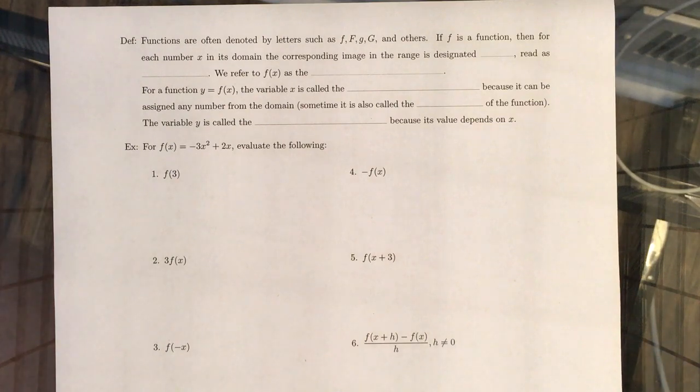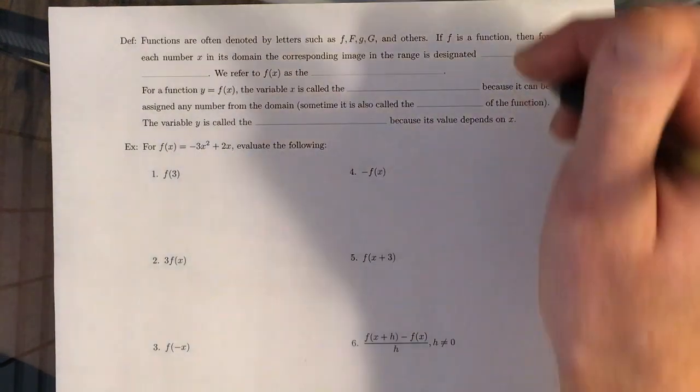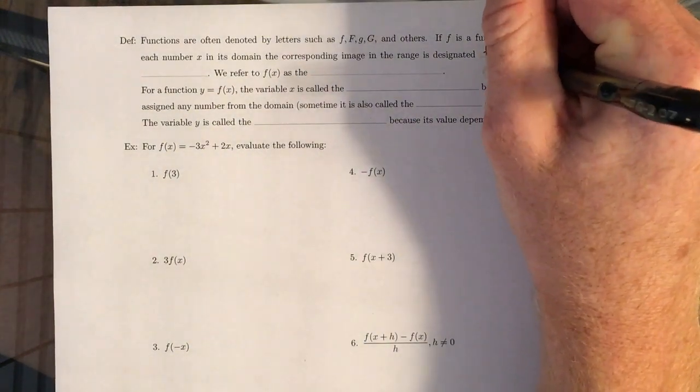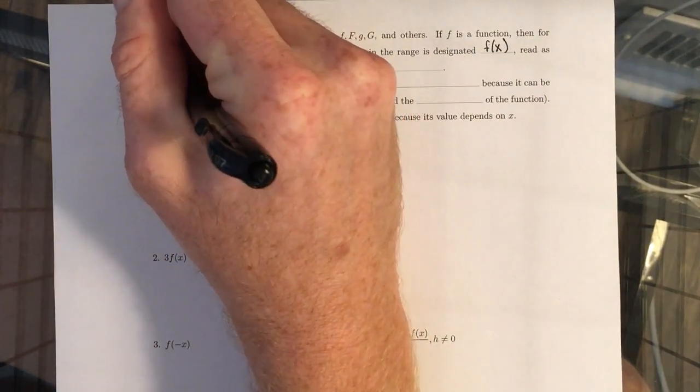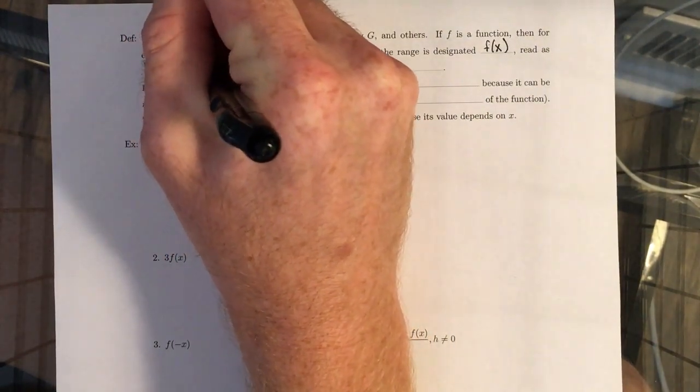Nothing too creative. So if F is a function, then for each number X in its domain, the corresponding image in the range is designated by F of X, right? And so that's read as F of X.